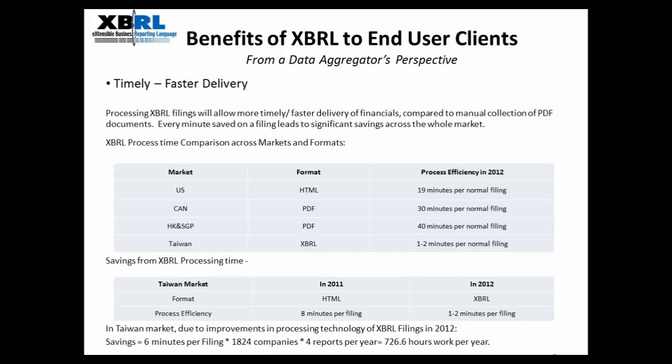This slide shows an estimate of the time taken to process XBRL filings. The first table compares our processing time of different types of filings across different markets in 2012. Processing HTML filings in the U.S. market takes approximately 20 minutes, and processing PDF documents in Canada, Hong Kong, and Singapore takes between 30 to 40 minutes. But processing XBRL in Taiwan takes only one to two minutes. It is evident that XBRL filings are most efficient to process, allowing more timely delivery of financials compared to manual collection of PDF or automatic parsing of HTML and PDF documents. Every minute saved on the filing leads to significant savings across the whole market.